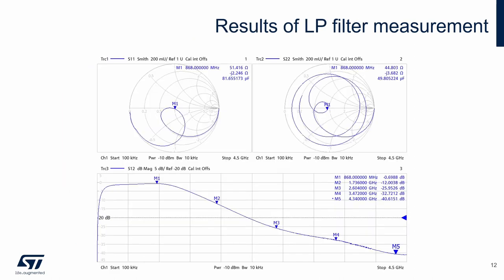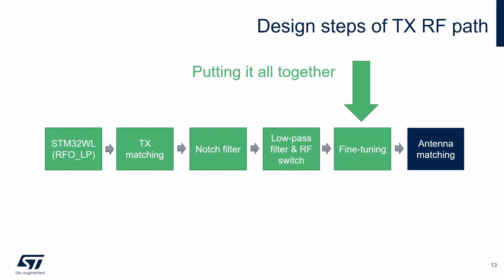Here are the measurement results of the low-pass filter with fine-tuned values and the RF switch. It is quite well matched at both ends. In the transmission chart, we can see slightly bigger insertion loss in the working band, which is caused by the RF switch and RF path. The markers show attenuation of 868 MHz harmonics — for example, attenuation of the 5th harmonic is about minus 41 dB. In the next design step, we connect the low-pass filter with the previous design steps and fine-tune them if necessary.